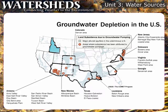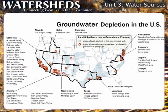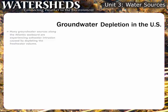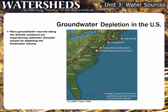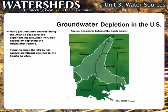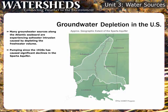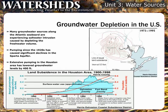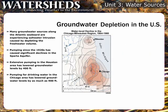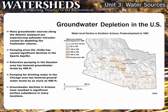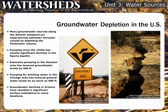Groundwater decline has become a significant issue facing many of our major population centers. Many groundwater sources along the Atlantic coast from Massachusetts to Florida are experiencing saltwater intrusion caused by depleting the freshwater volume. Pumping since the 1920s has caused significant declines in the Sparta Aquifer underlying parts of Arkansas, Louisiana, Mississippi, and Tennessee. Extensive groundwater pumping in the Houston, Texas area has lowered water levels by 400 feet, causing extensive land surface subsidence. Pumping for drinking water used by over 8.2 million people in the Chicago area has lowered groundwater levels by as much as 900 feet. Groundwater levels near Tucson and Phoenix, Arizona have declined by 300 to 500 feet, resulting in significant surface subsidence in many locations.